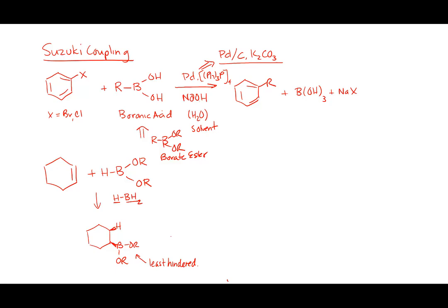Take the borate ester and add it to a bromobenzene using Pd/C, potassium carbonate, and water — and you couple the double bond to the benzene ring, ending up with the cyclohexane ring (or whatever the alkyl group was) attached to benzene. This allows you to add pretty complicated alkyl groups to the benzene ring.